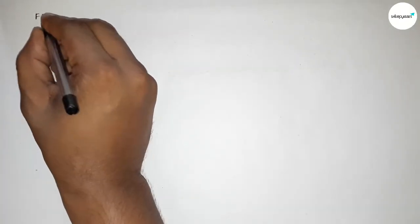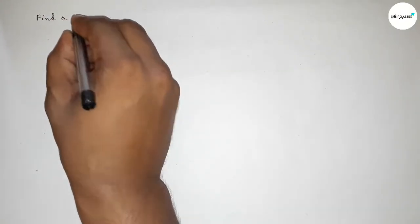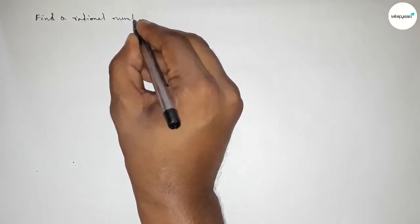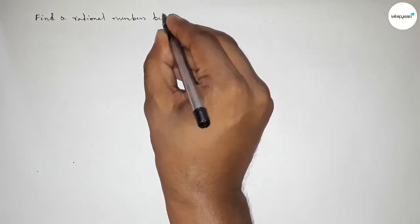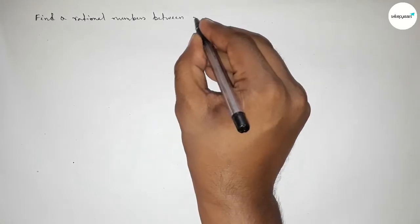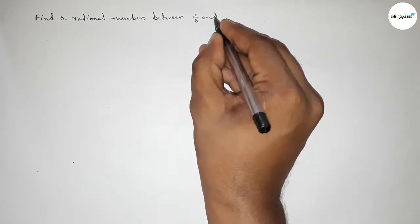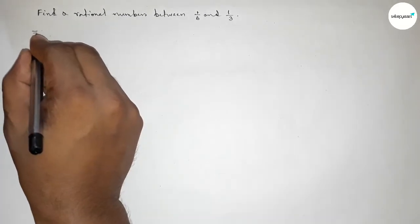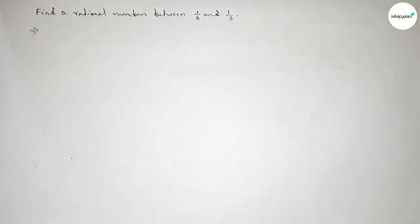Hi everyone, welcome to SI Share Classes. Today in this video we have to find out a rational number between 1 over 6 and 1 over 3. So let's start the video. First of all, let's solve this problem.